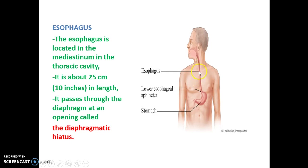The esophagus is about 25 centimeters or 10 inches in length. It passes through the diaphragm at an opening called the diaphragmatic hiatus. So the esophagus passes through a hole in the diaphragm called the diaphragmatic hiatus.